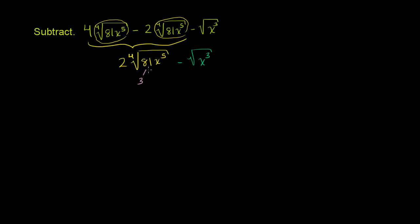81 — if we do prime factorization — is 3 times 27. 27 is 3 times 9, and 9 is 3 times 3. So 81 is exactly 3 times 3 times 3 times 3, so 81 is 3 to the fourth power, which is convenient because we're taking the fourth root of that. And then x to the fifth we can write as a product: I'm going to write what's under the radical as 3 to the fourth power times x to the fourth power times x. So x to the fourth times x is x to the fifth power, and I'm taking the fourth root of all of this.